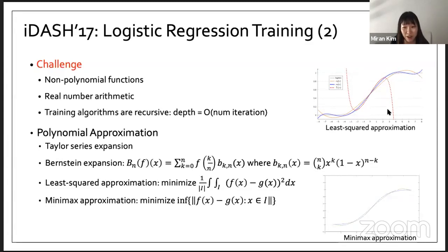As seen in this figure, the approximated polynomial with a small degree, for example degree three or degree seven, the approximated polynomial with very small degree is very close to the real sigmoid on certain ranges.